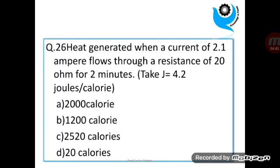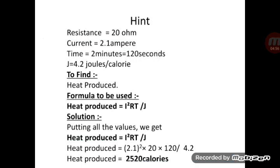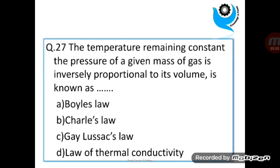Question 26: Heat generated when a current of 2.1 Ampere flows through a resistance of 20 Ohm for 2 minutes. Take J equal to 4.2 Joules per calorie. Question 27: The temperature remaining constant, the pressure of a given mass of gas is inversely proportional to its volume, is known as? Answer: Boyle's Law.